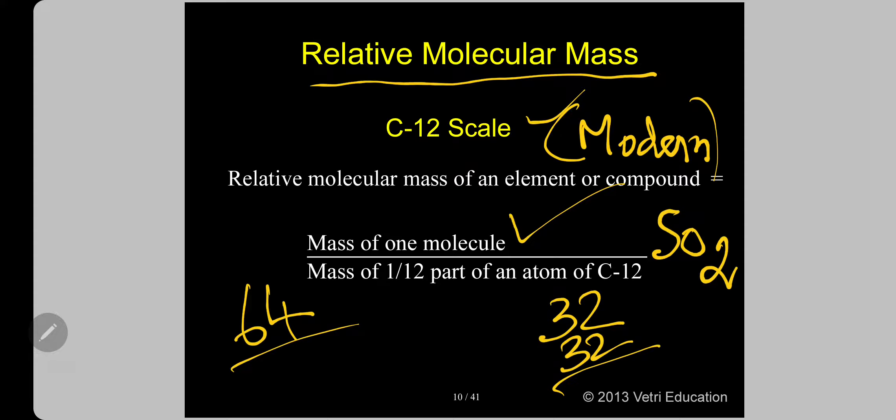I accidentally used the word molecular weight. You must know the difference between molecular mass and molecular weight. Mass is constant anywhere in the universe, but weight varies due to gravitational force — on Earth your weight is different from on the Moon. That is why we use the term mass. In the C-12 scale, the mass of one molecule of SO₂ is 64; since 1/12 of carbon-12 is 1 gram, the relative molecular mass is 64.